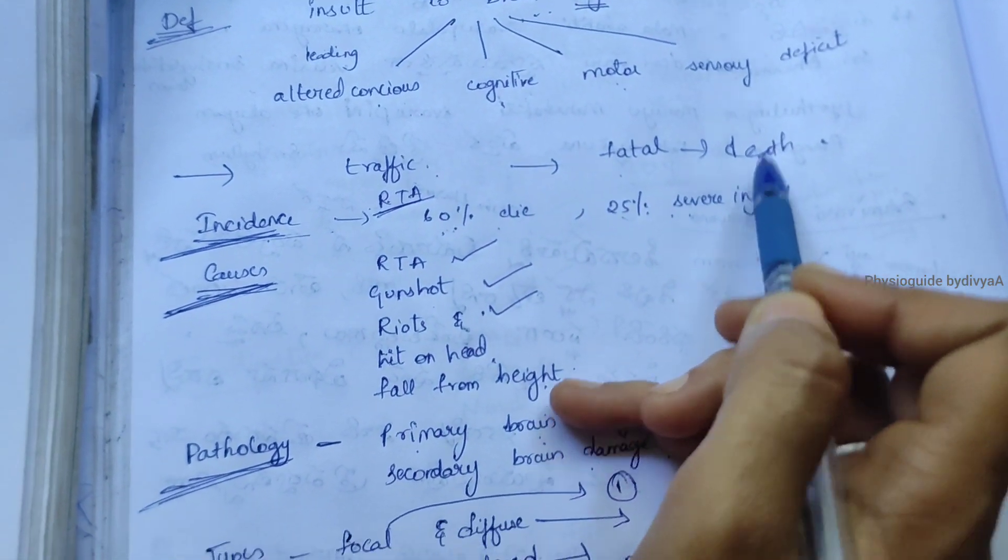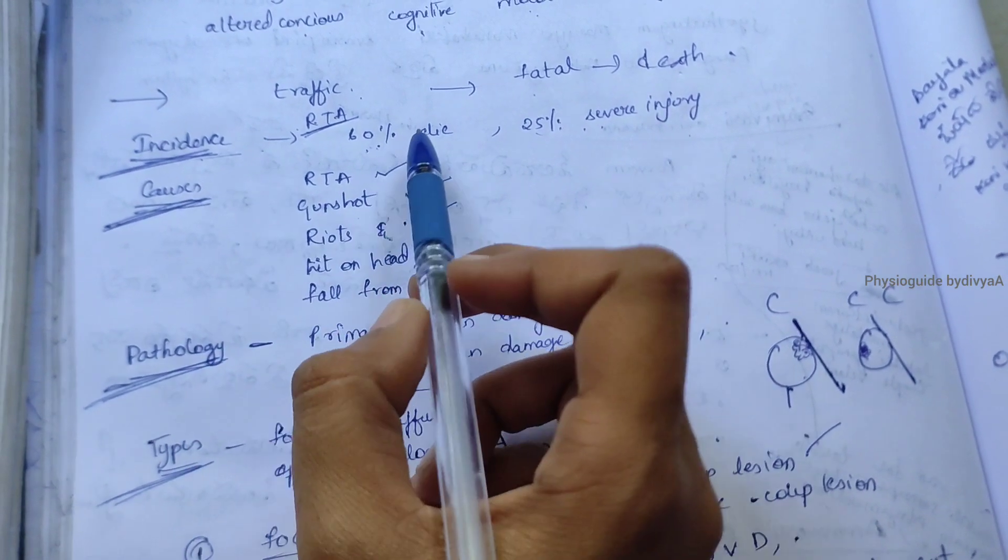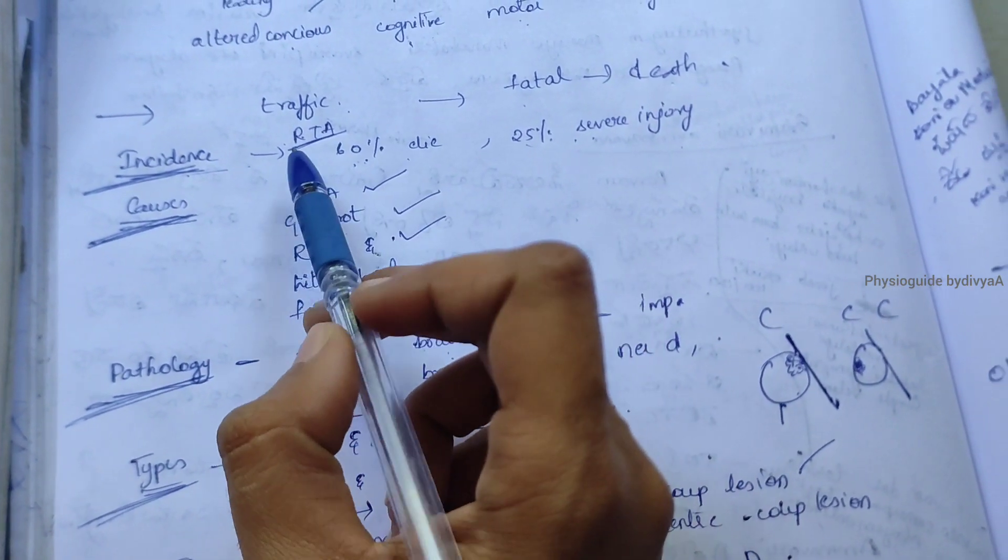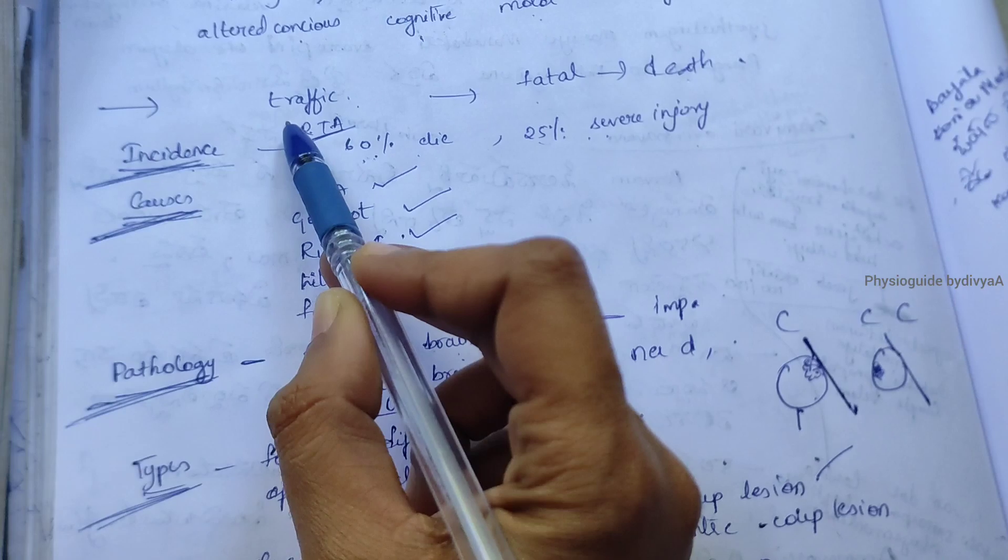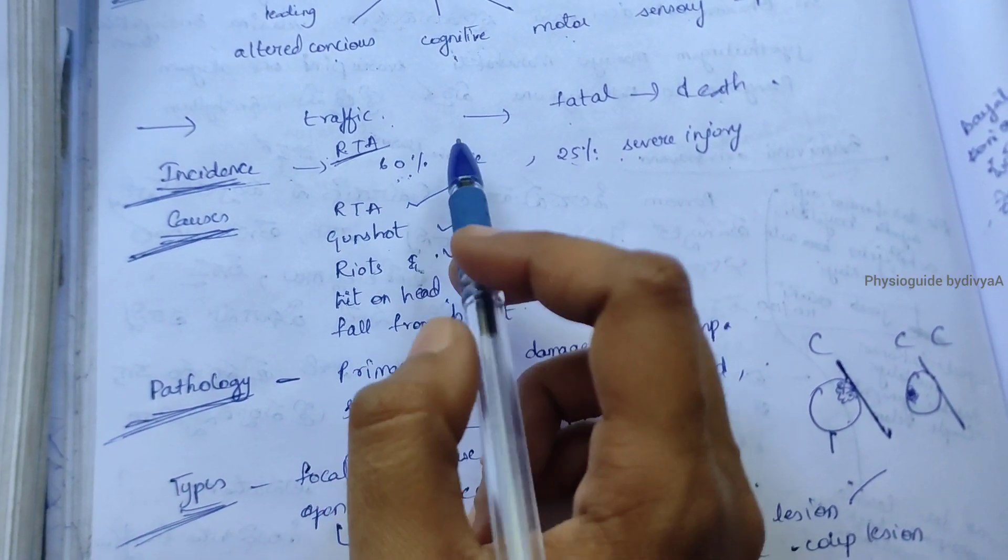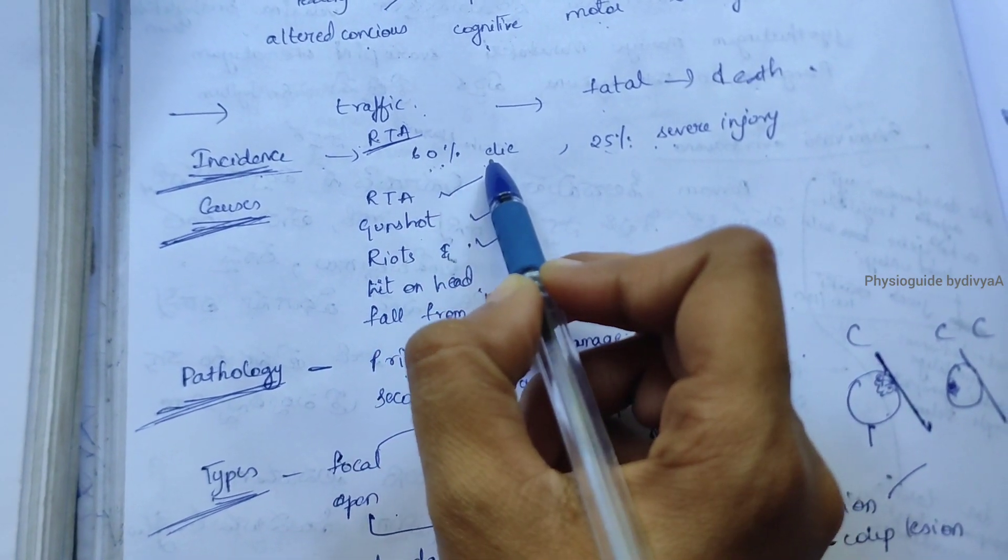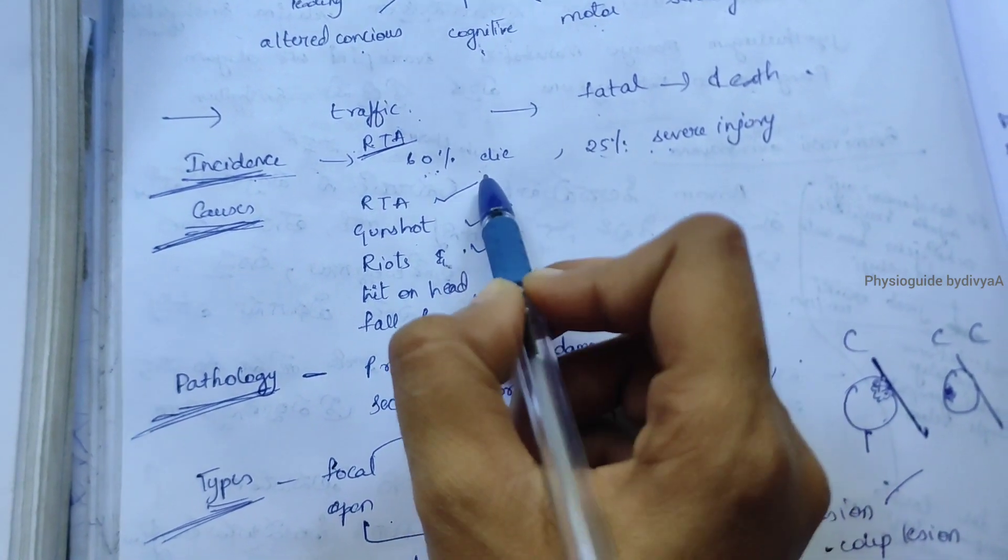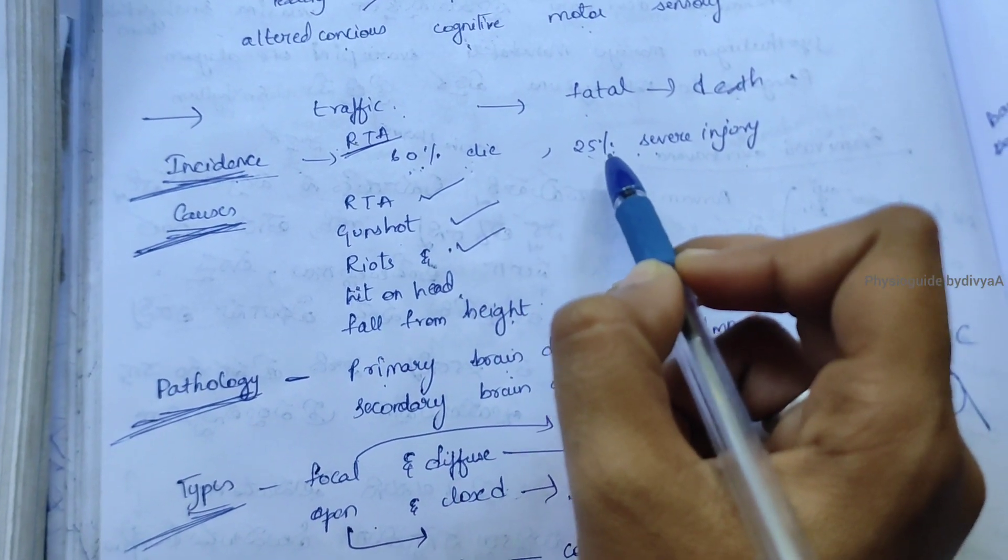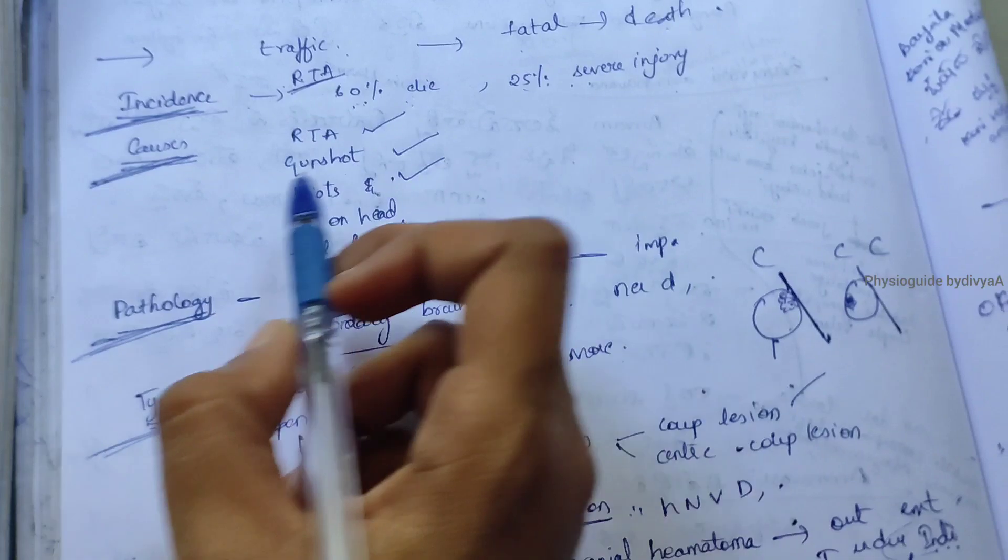Head injuries are mostly seen in RTA cases - road traffic accidents. RTA cases contribute to 60 percent of deaths. They die before they reach the hospital, and 25 percent of people are severely damaged or injured.